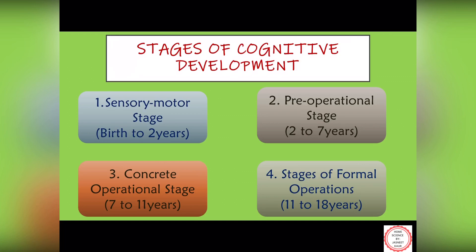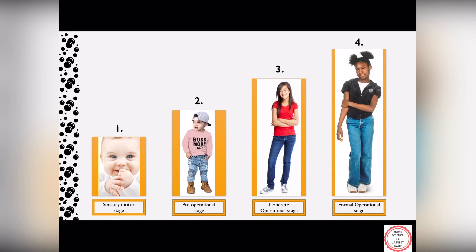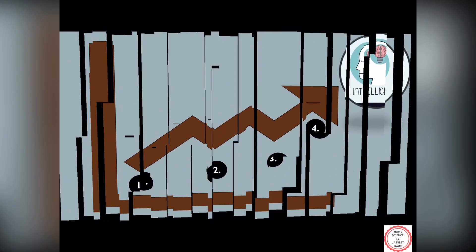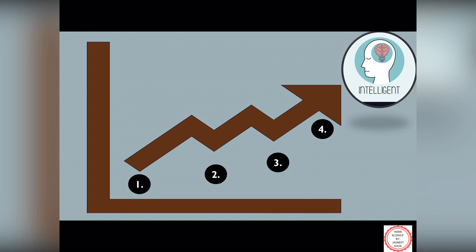In this video I will only focus on the sensory motor stage because it has sub-stages as well, so please understand this stage carefully. In the next video I will cover the rest of these stages in detail. Coming back to Jean Piaget — he believed that each child goes through these stages in order to achieve maximum cognitive development. He also viewed children as little scientists.